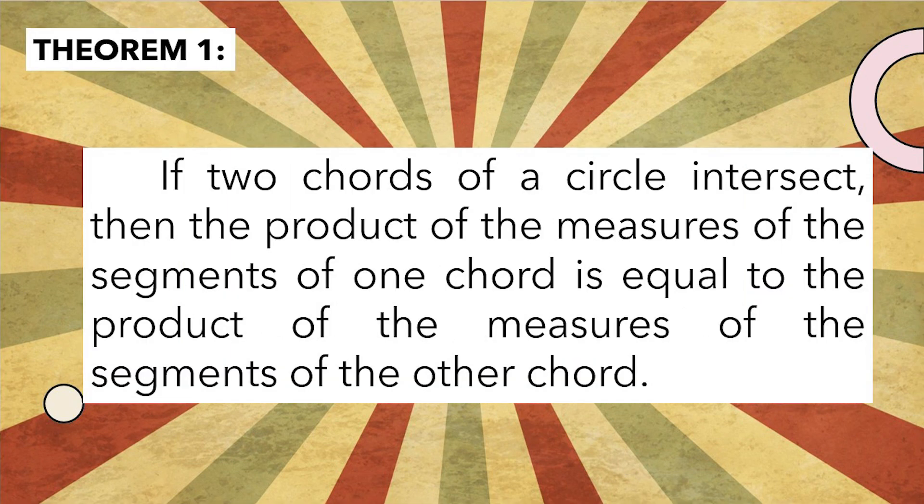First, we have the intersecting segments of chords power theorem. The theorem states that if two chords of a circle intersect, then the product of the measures of the segments of one chord is equal to the product of the measures of the segments of the other chord.